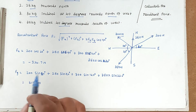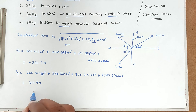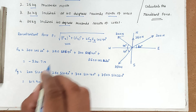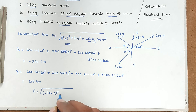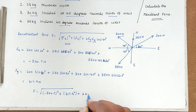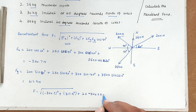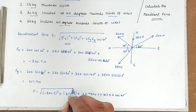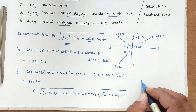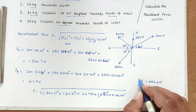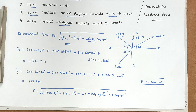Substituting into the resultant force formula: F = √((−324.7)² + (317.9)² + 2·(−324.7)·(317.9)·cos 90°). Since cos 90° = 0, the last term vanishes. Therefore the resultant force F = 454.4 N. That is how we solve this problem. We will see the next problem in the next video — thank you.